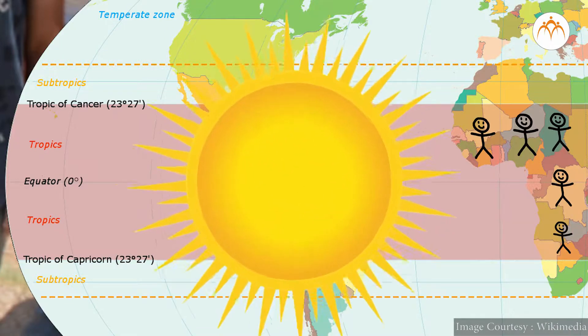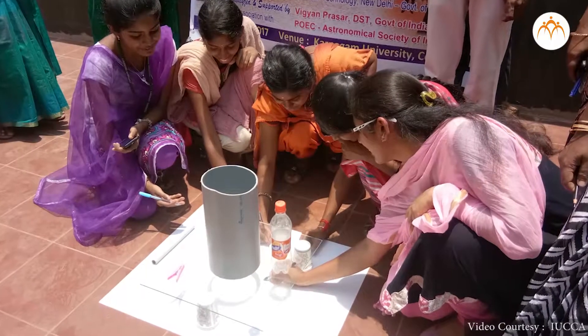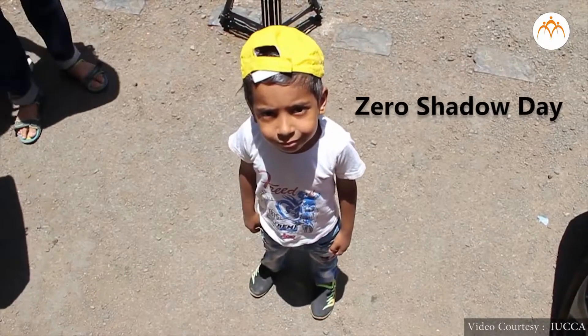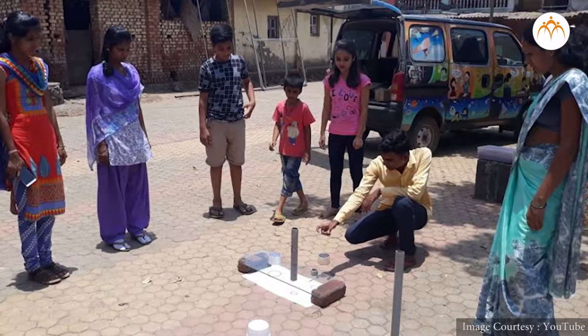On these days, the sun will not cast a shadow of an object on the ground. This zero shadow day will clearly be different for different places on Earth. On this day, your shadow will be exactly below you.